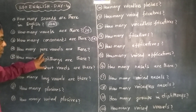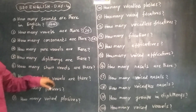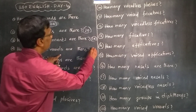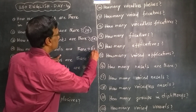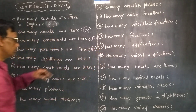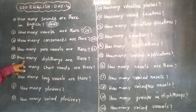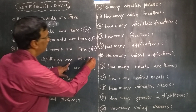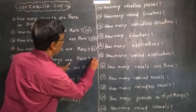How many fewer vowels? There are 12 fewer vowels. How many diphthongs are there? There are 8 diphthongs.